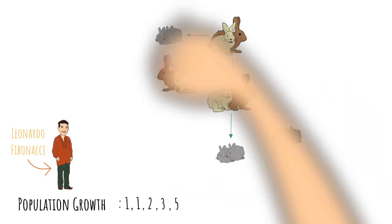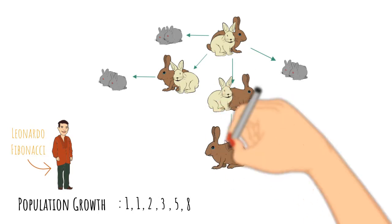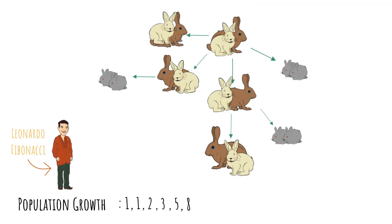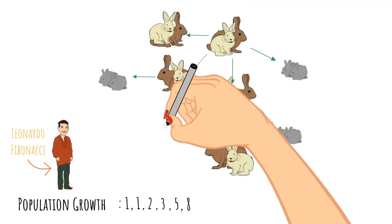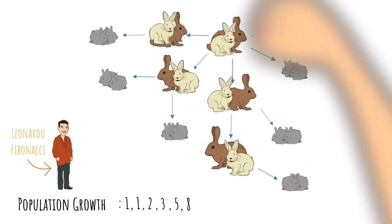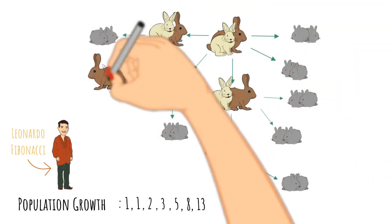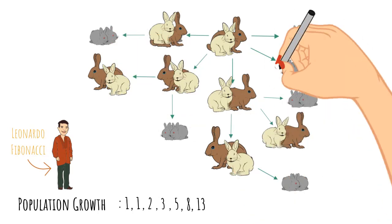Now all our reproductive pairs can have more babies, giving us a total of eight pairs, but don't forget that some of our baby rabbits will now become adult rabbits able to reproduce. Now we have a total of five adult pairs able to reproduce a new pair of baby rabbits. And if we count all that up, we get 13 pairs of rabbits. And at the same time, some of them become adult rabbits.